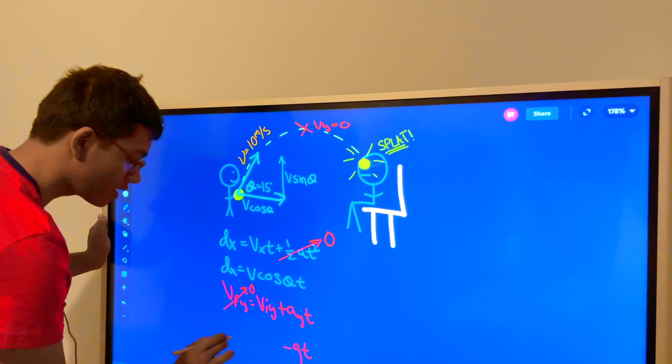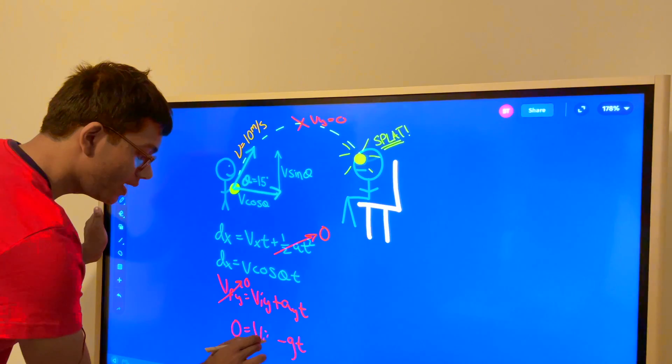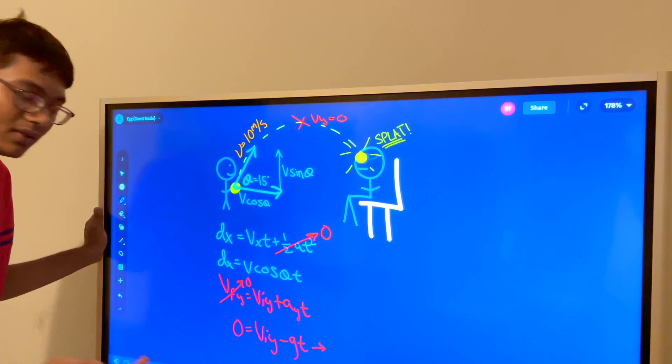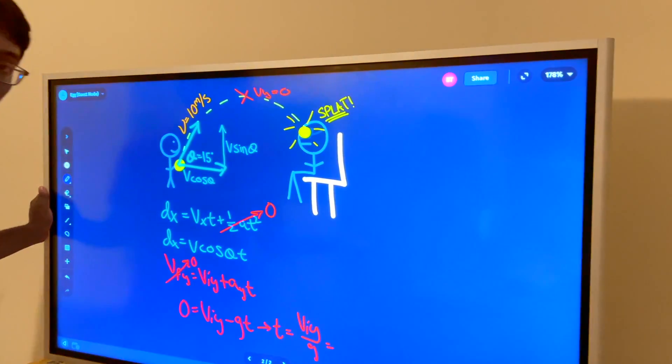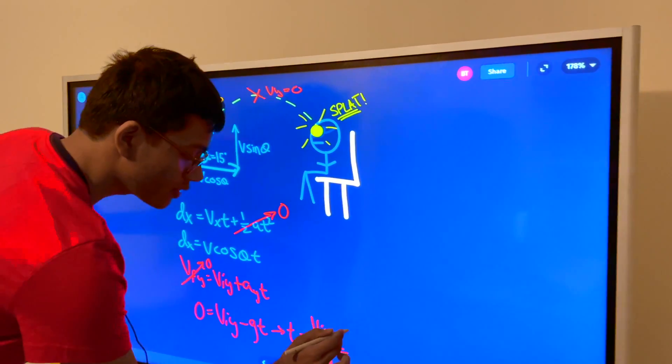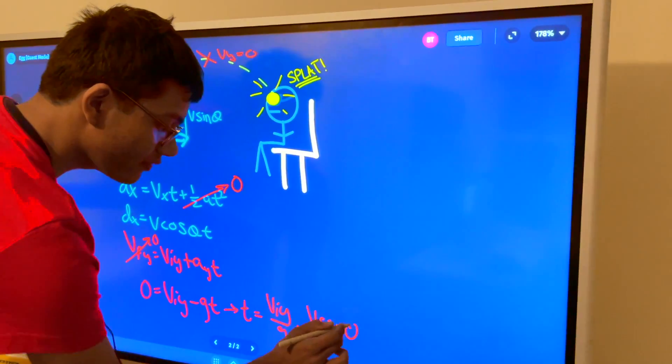This term is going to go to zero. And so you're going to be left with zero is equal to v_iy minus g*t. So if I solve for t what am I going to get? I'm going to get t is equal to v_iy divided by g. But I know what v_iy is. v_iy is v*sin(θ). So I can say v_iy is v*sin(θ) divided by g.